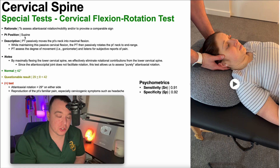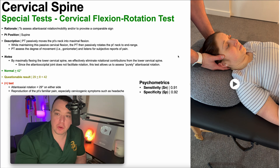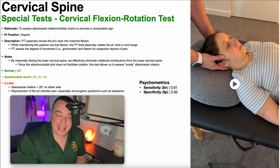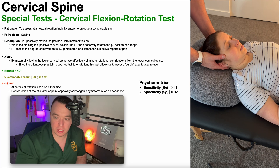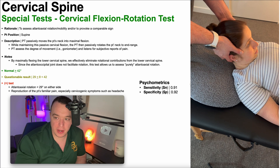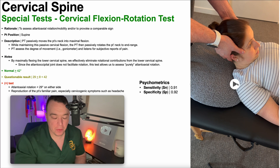So without boring you any further, let's get into the performance of the test right now. To perform the cervical flexion rotation test, the patient will be positioned in supine as you see over here in the video clip. The PT will passively move the patient's neck into maximal flexion. So there is maximal cervical flexion.